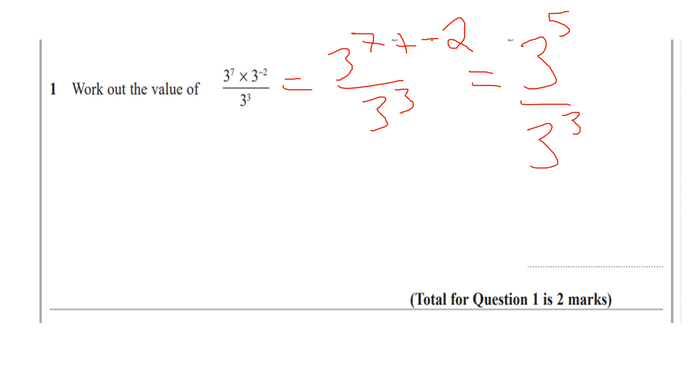Again, the second law of indices states that if I divide with the same base, I subtract the powers. So 3 to the power of 5 take away 3 is 3 squared. Now, be careful.